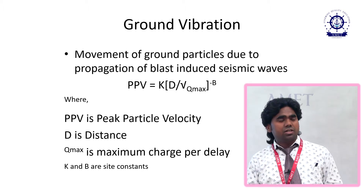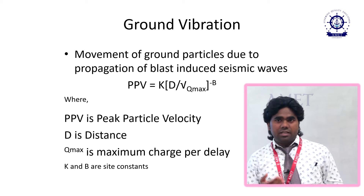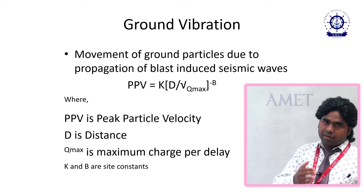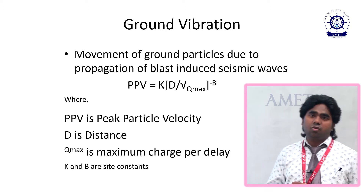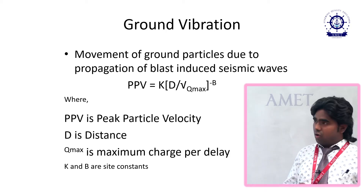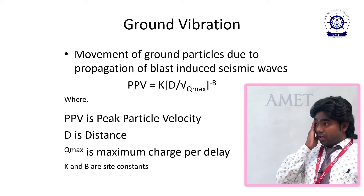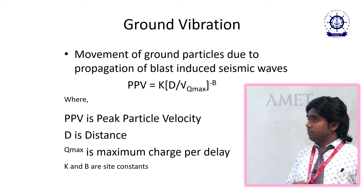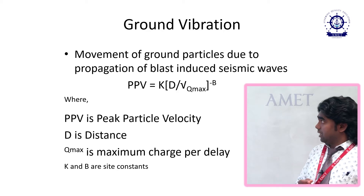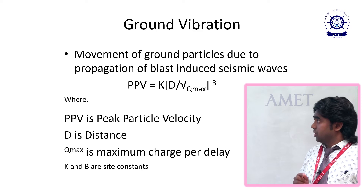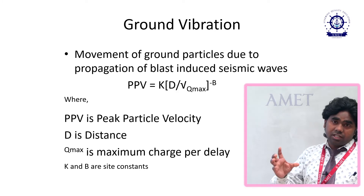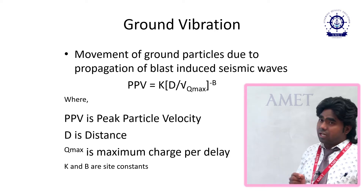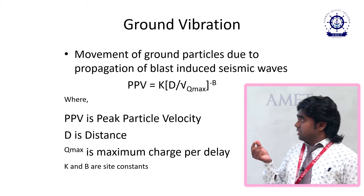PPV is calculated by different formulas; in our country we use the USBM formula: PPV = K × (D / √Q_max)^(−B), where PPV is peak particle velocity, D is scaled distance, Q_max is maximum charge per delay, and K and B are site parameters. K and B are uncontrollable parameters, whereas D and Q are controllable parameters. We can adjust the distance from the blast site and we can also adjust the maximum charge per delay.